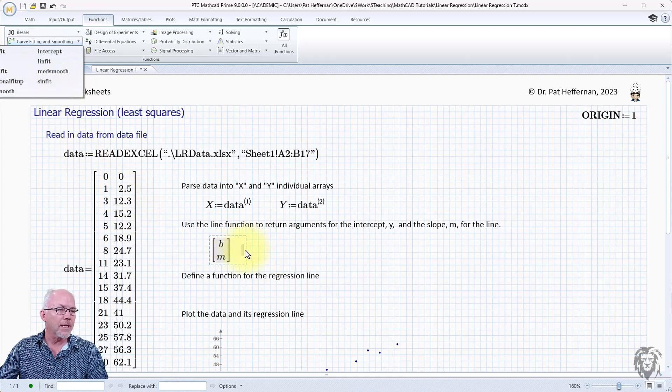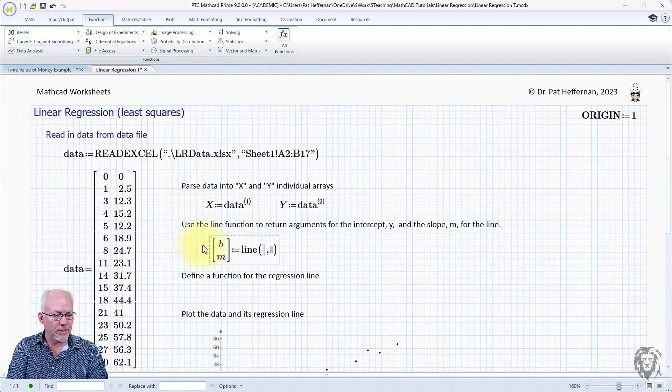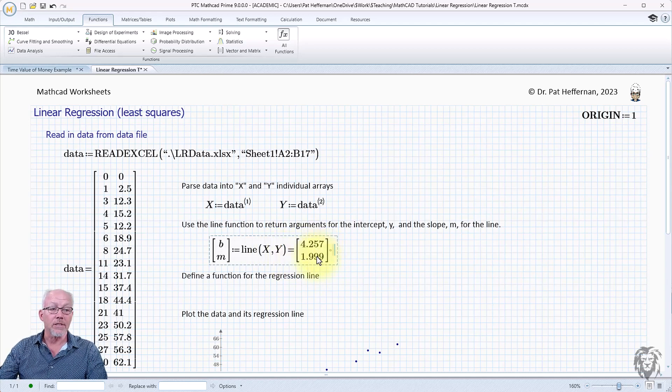So let's use the line. We'll just choose it here, and it asks for two parameters, which are the x and the y data points, which is why we parse them out into two individual arrays. Then we set it, and we hit equals, and it gives us our two values. So as I told you, that is your b and your m in that order.